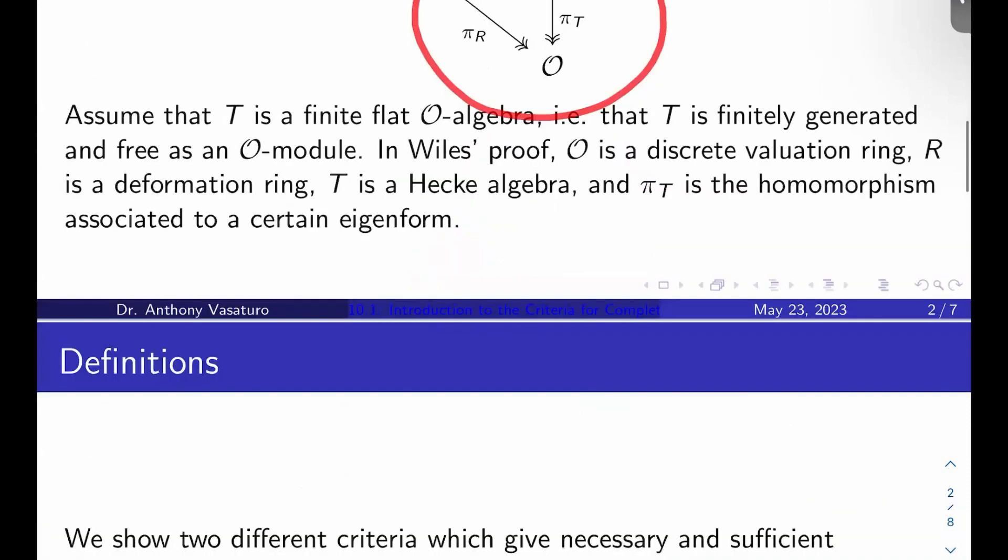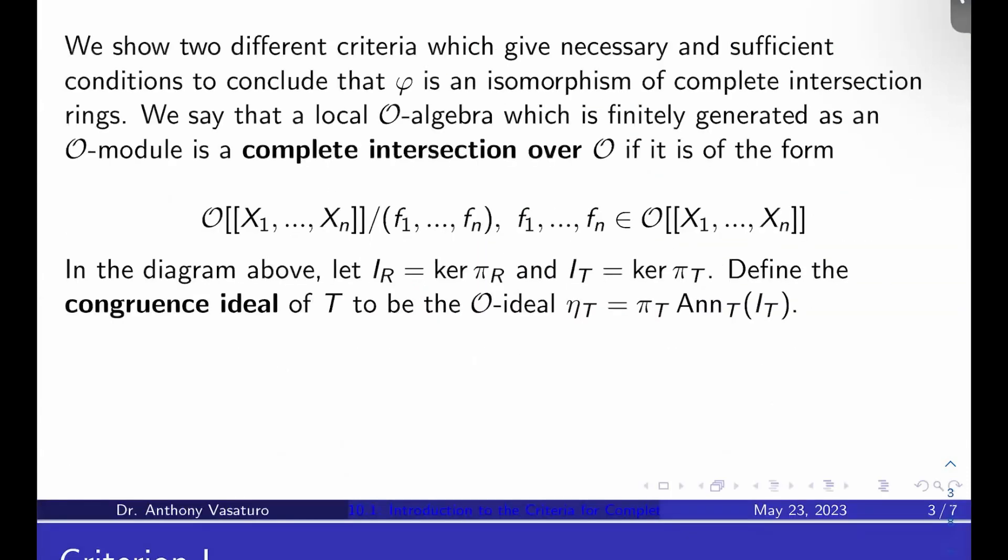So definitions. We're going to show two different criteria which give necessary and sufficient conditions to conclude that that top map in that triangle φ is an isomorphism of complete intersection rings. To that end, some definitions. We'll say that a local algebra, which is finitely generated as an O-module, is a complete intersection over O if it's isomorphic to something of the form O double bracket X_1 through X_N, so power series in N variables over O mod F_1 through F_N, where F_1 through F_N are in the power series ring.